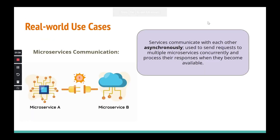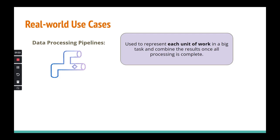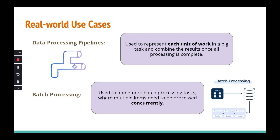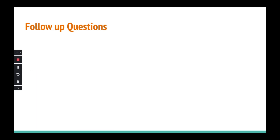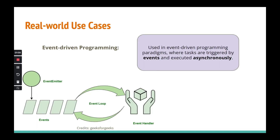Let's move on to real-world use cases of CompletableFuture. First: microservice communication — multiple microservices communicating asynchronously, sending requests and receiving responses. Second: data processing pipeline — chaining multiple asynchronous computations, combining results from all parts of the pipeline. Third: batch processing — processing multiple items concurrently. Fourth: event-driven programming — in response to events, triggering computations or tasks asynchronously.